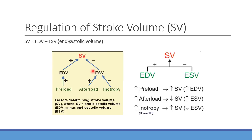As end-systolic volume increases, stroke volume goes down — a higher end-systolic volume can signal the heart isn't efficiently ejecting blood. For someone with poor left ventricular function, stroke volume goes down because they're not beating efficiently. This is seen as changes in ejection fraction — how much is actually being ejected per beat.